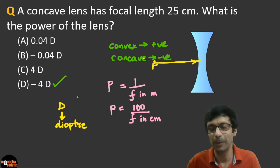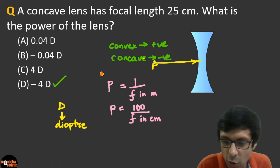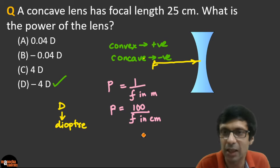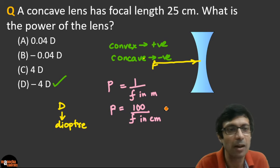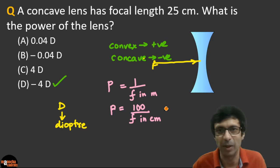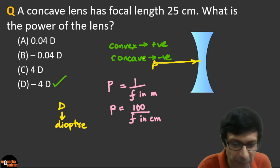The right answer is minus 4 D — minus 4 diopters. Remember the important tip: you can use 1 over focal length in meters, or if the focal length is in centimeters, use 100 over F in centimeters.